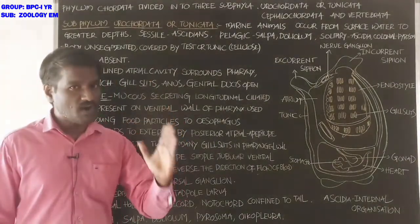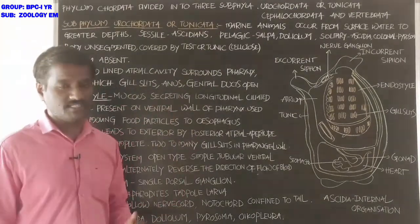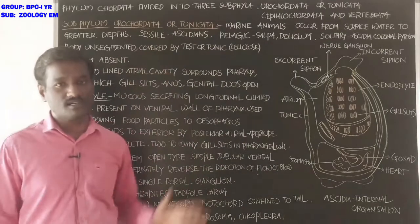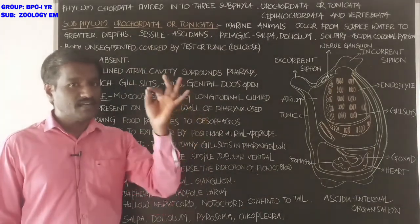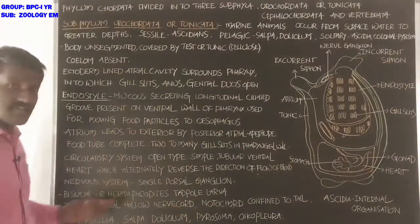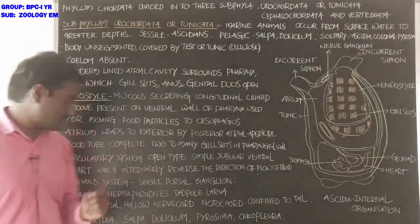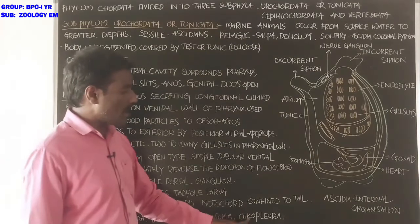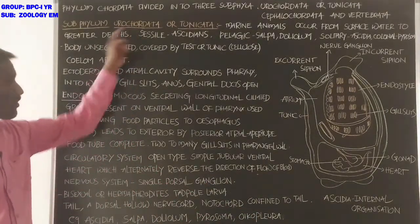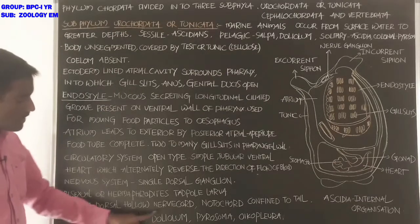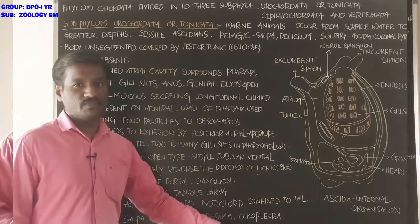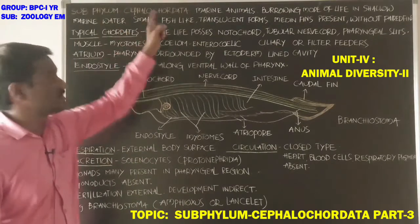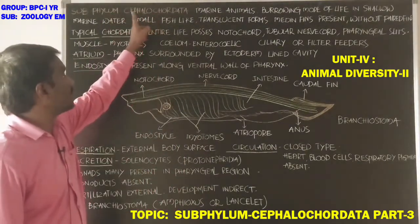The notochord extends into the tail in the larva. By retrogressive metamorphosis, the notochord disappears when it develops into the adult stage. Examples: Ascidian, Salpa, Doliolum, Pyrosoma, Oikopleura.